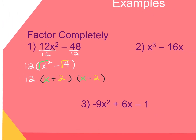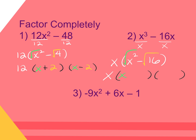Always look for a greatest common factor first. The GCF between x to the third and 16x is just going to be x, because they both have an x in common. I'm going to divide and I'm left with x squared minus 16. Again, the difference of two squares. So I'm going to square root the x squared and square root the 16. Don't forget about that GCF — it needs to come in front of the answer. Create your two binomials: the square root of x squared is x, the square root of 16 is 4. One gets a plus sign, one gets a minus.